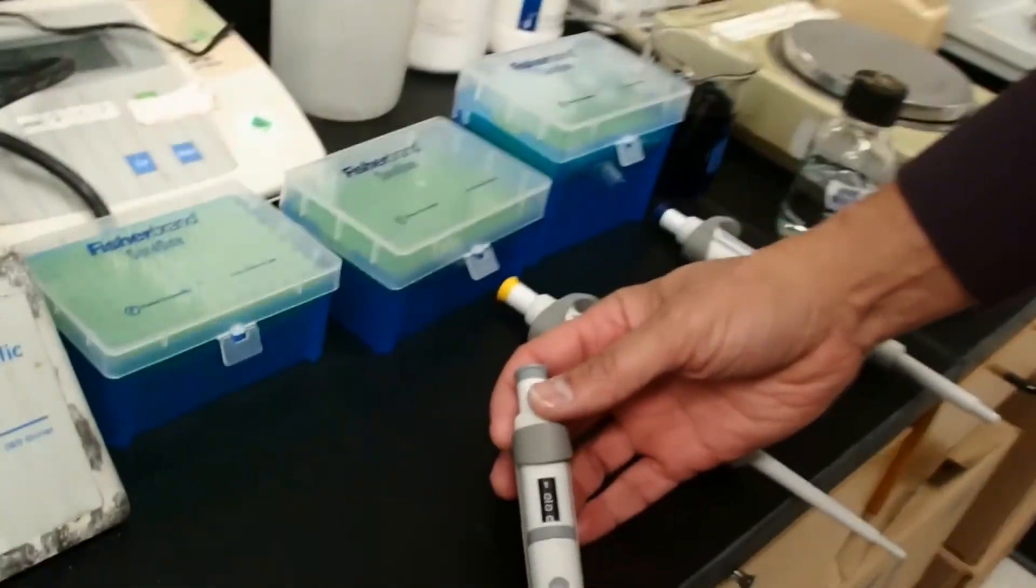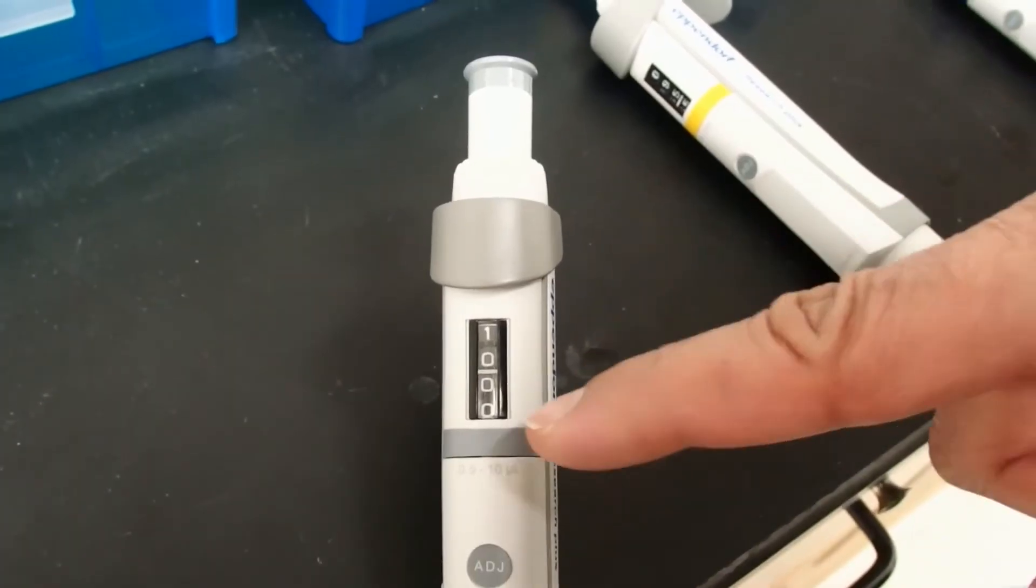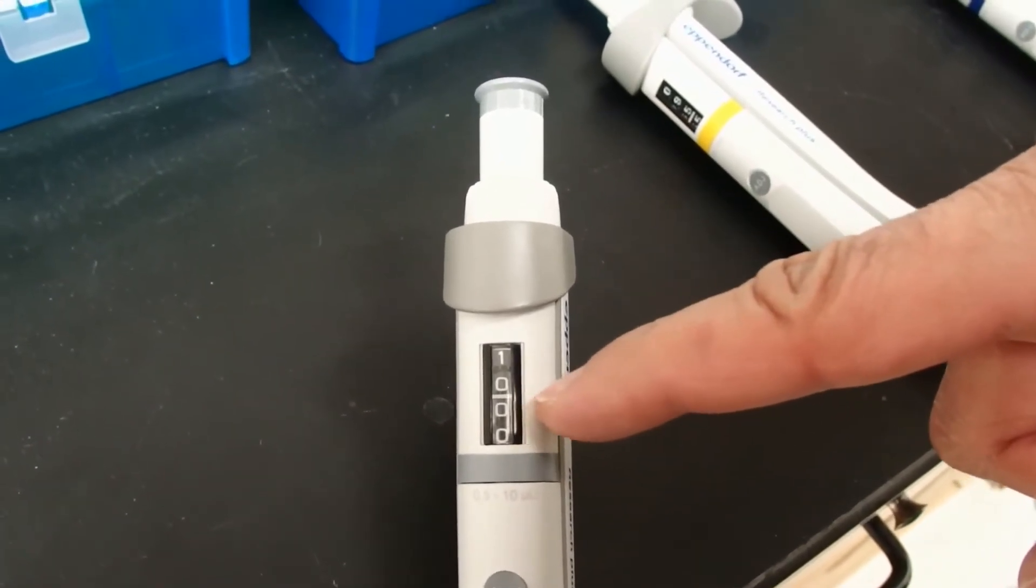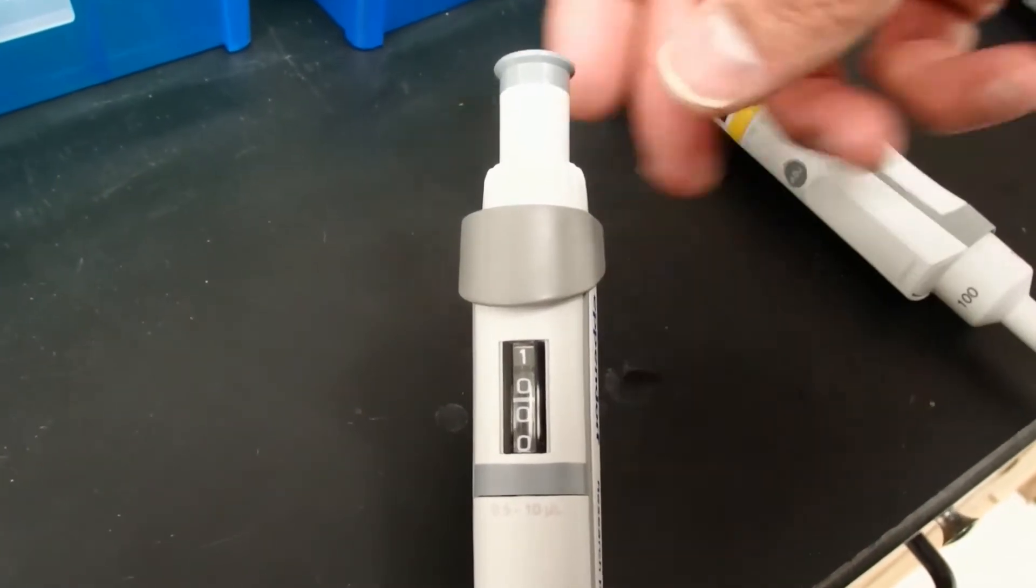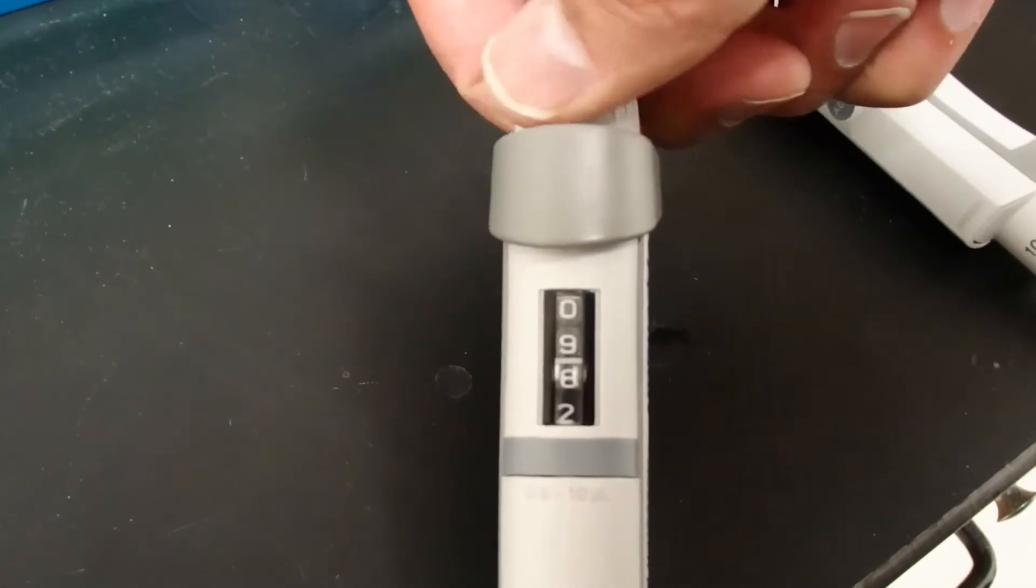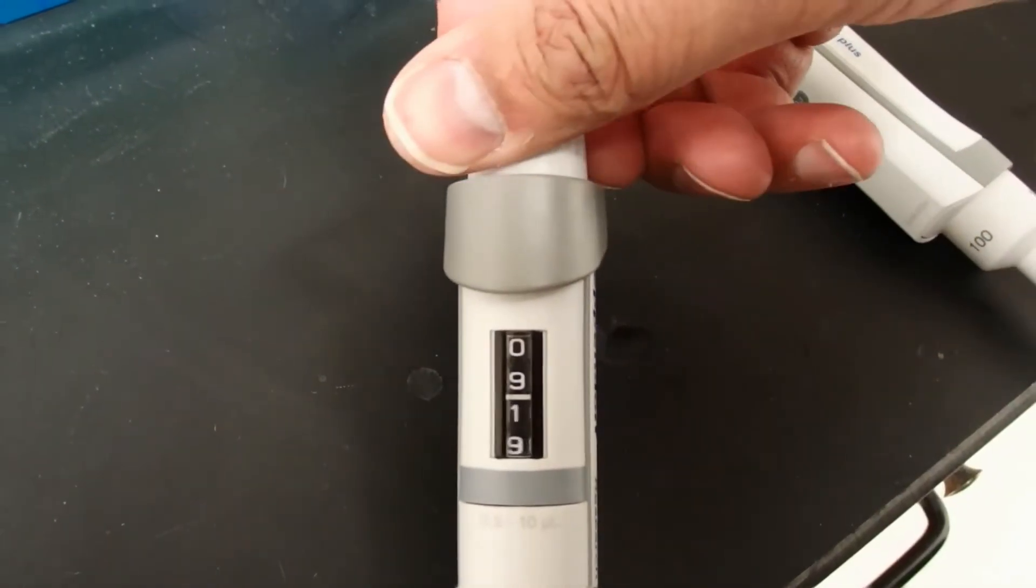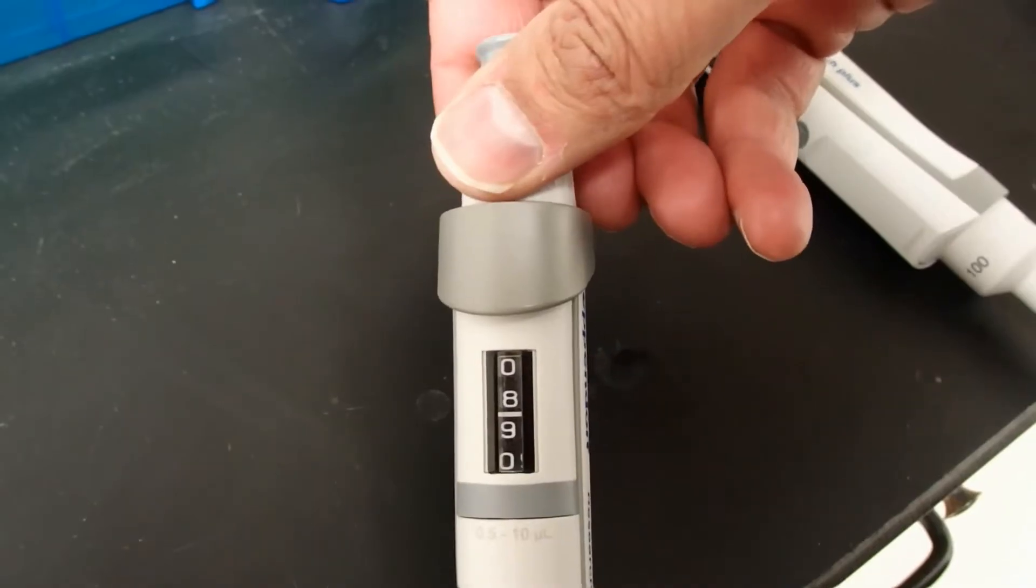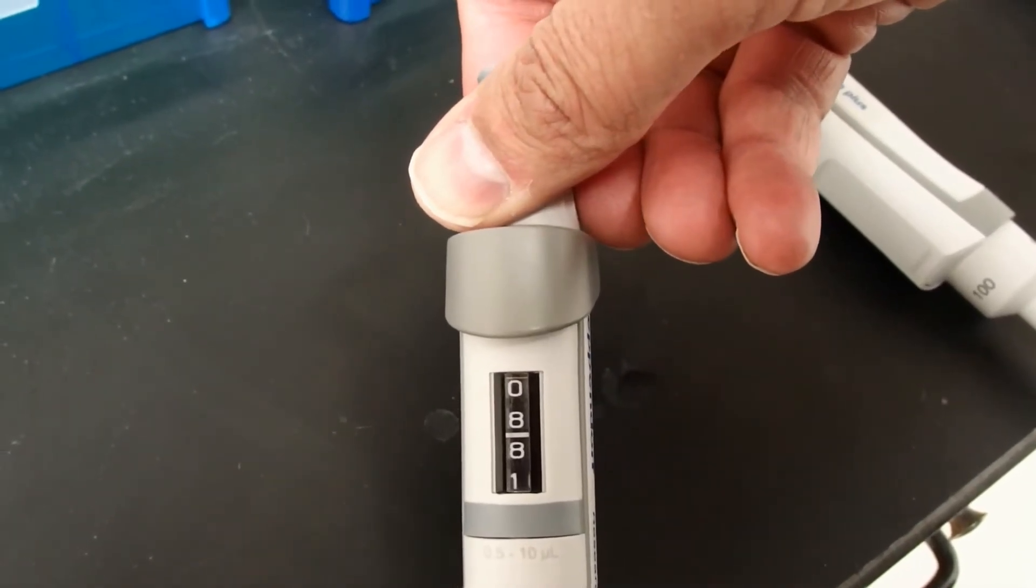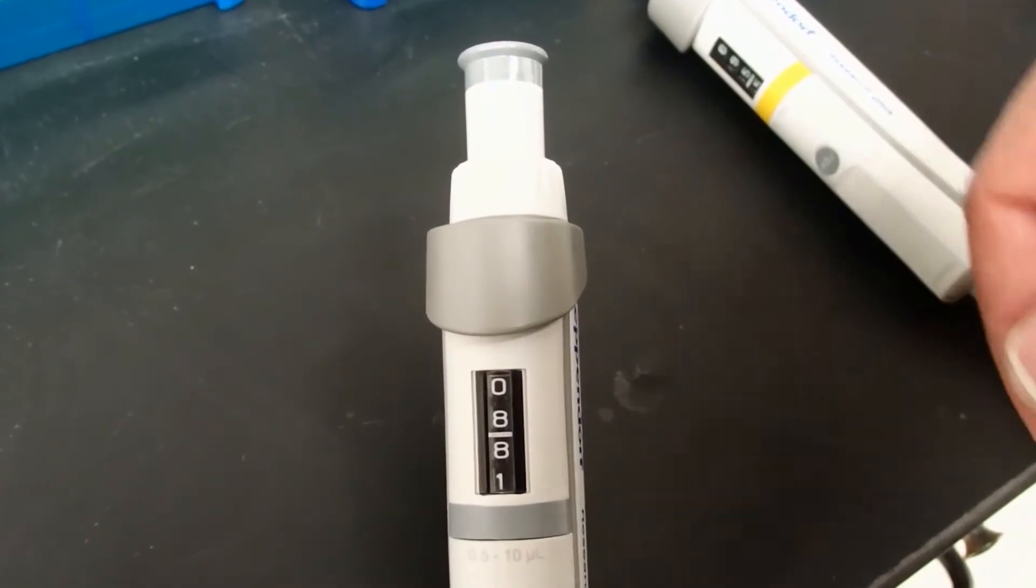The P10 has a range between 0.5 and 10 microliters. You can see the line here, which is the decimal point, is in the middle. So this reads 10.00 microliters. We could change that to whatever we want as long as we stay in the range. I'm going to put this at 8.81 microliters.